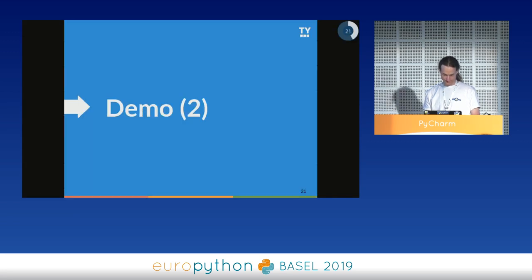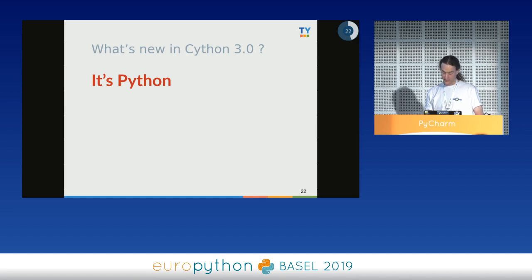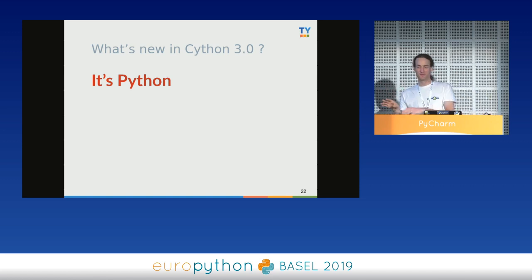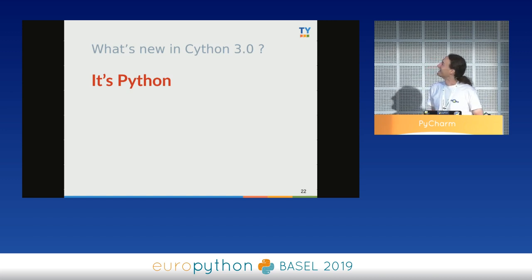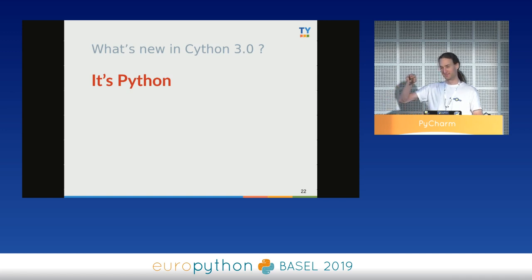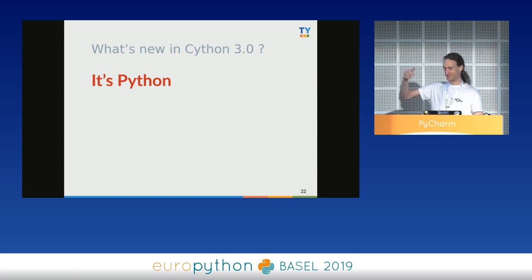One title of this talk was Cython 3. Those of you who already use Cython know it's always been a 0.something version — currently 0.29. So what is Cython 3? If you push the dots one digit to the right, the next obvious version after 0.29 is 3.0. That's a bit frightening — jumping from 0.something to 3.0.